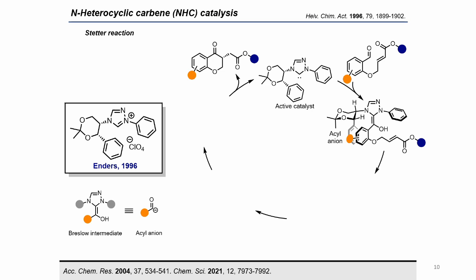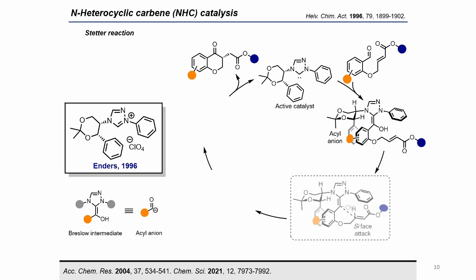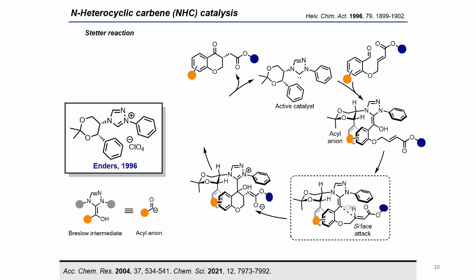This intermediate allows umpolung processes with aldehydes, such as the intramolecular Stetter reaction reported by Enders, where the intramolecular 1,4-addition of the acyl anion is controlled by the steric effect of the chiral catalyst, with the Si-face attack being the preferred one. After the addition, an intramolecular hydrogen transfer occurs from the ester enolate to the alcohol. Subsequently, an elimination releases the reaction product, regenerating the catalyst.